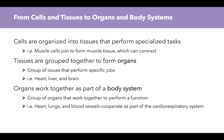Cells are organized into tissues that perform specialized tasks. A muscle cell on its own isn't going to do a whole lot, but it joins to form muscle tissue, and then that muscle tissue can contract as a function. Tissues are grouped together to form organs — a group of tissues that perform specific jobs. Some familiar ones are the heart, liver, and brain. Organs work together as part of a body system. For example, the heart, lungs, and blood vessels cooperate as part of the cardio-respiratory system, which is how we obtain and deliver oxygen and nutrients to all cells in the body, and also how we get rid of waste.